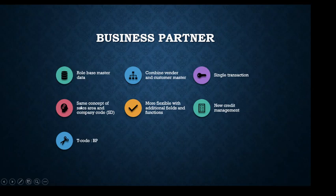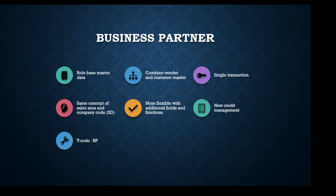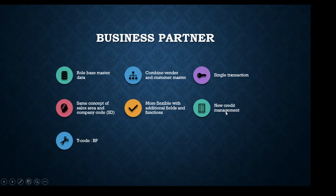Comparing to ECC, the older version of SAP, the same concepts are available — for example, company code data view is the same as before, but more flexible with additional fields and functions. In Business Partner, abbreviated as BP, there are more available views and fields, and new credit management can also be leveraged. Business Partner is a role-based business function available with one transaction code, also called BP — a short abbreviation that's easy for users to remember.